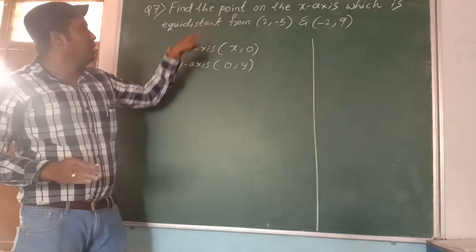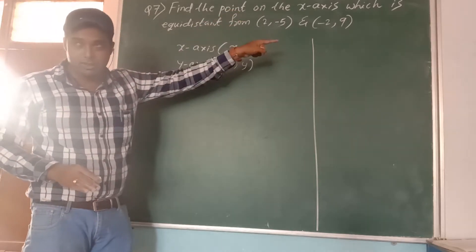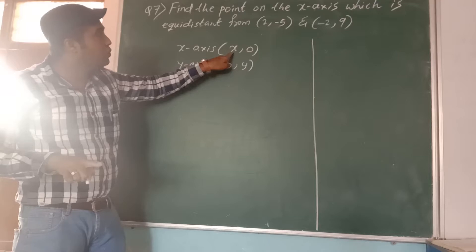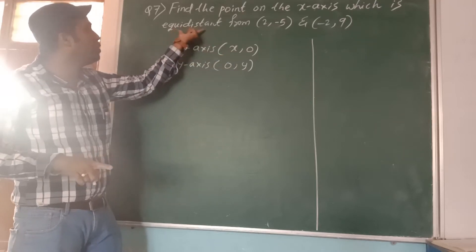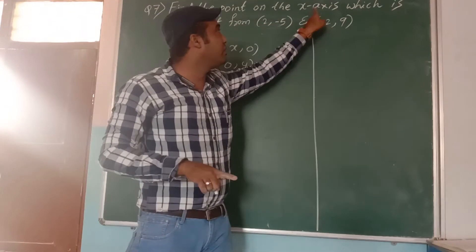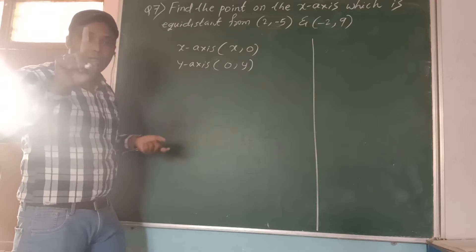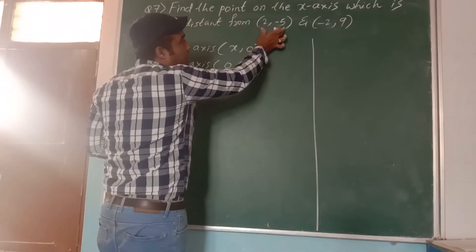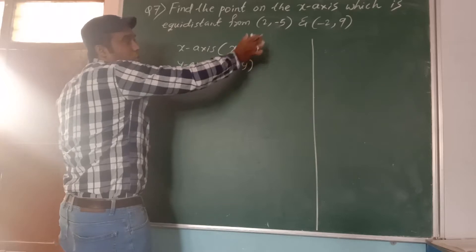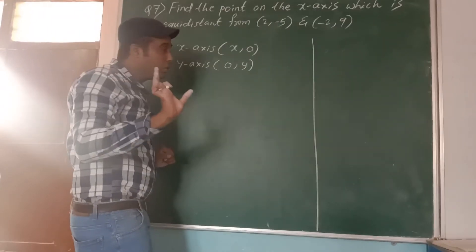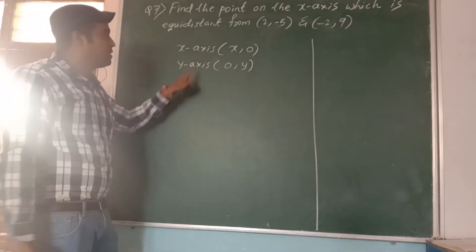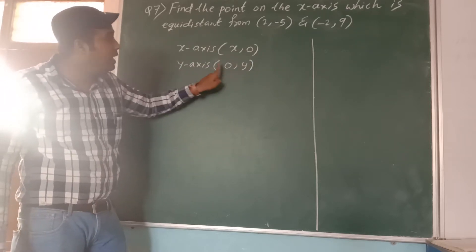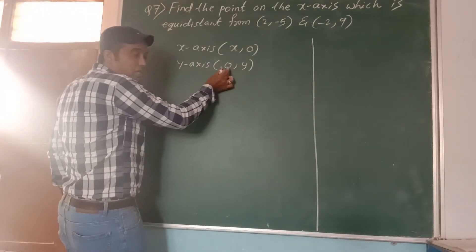Remember this. The y-axis point will be present as the second of the pair of points. So when they ask y-axis, you must take (0, y) — never take (y, 0). Because y will be the second coordinate and x will be the first. X-axis: take (x, 0). Y-axis: take (0, y). Never swap them.